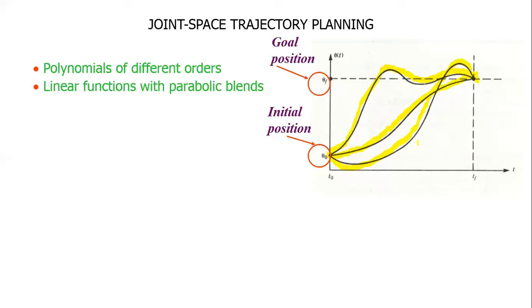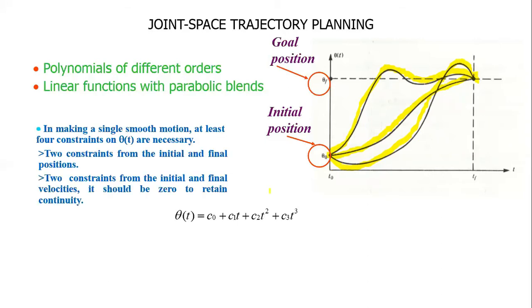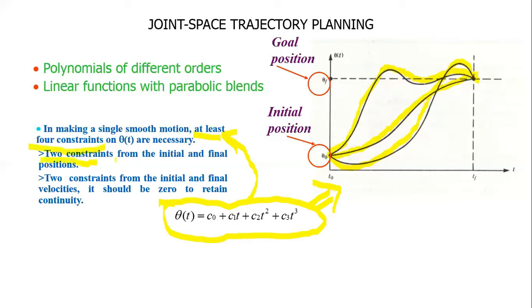Let's take an example of third-order polynomials. In the case of a third-order polynomial, we need at least four constraints to define it. Two constraints can be obtained from the initial and final positions, and another two from the initial and final velocities. In most cases, the initial and final velocities are zero if the robot starts from rest and stops at rest. This constraint helps us retain continuity.